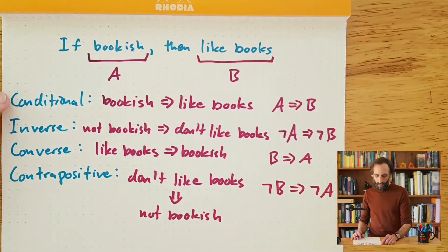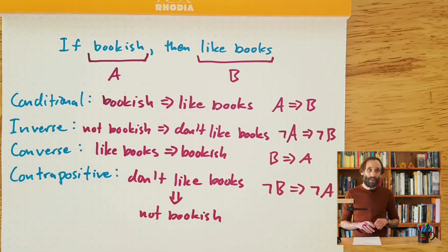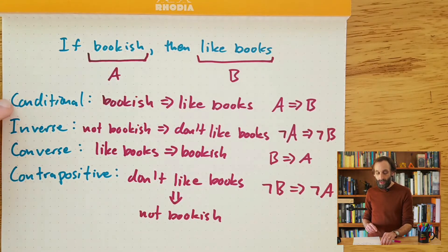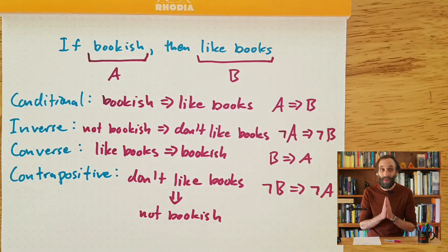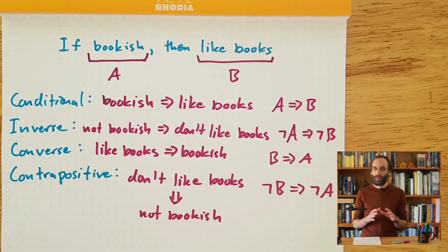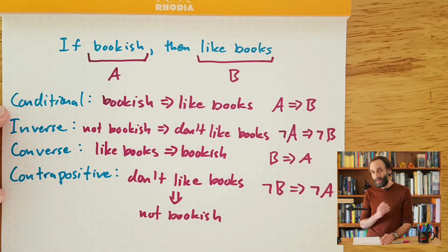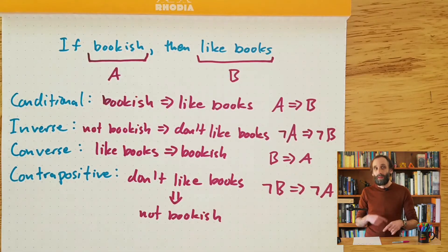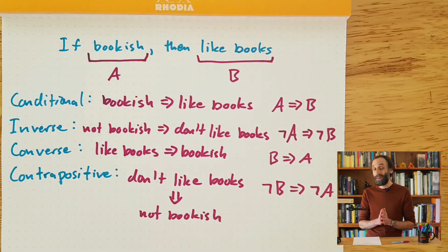So we have our four forms — the original conditional and three other forms. One of these other three forms is equivalent to the original conditional — it has the same truth value. I'd challenge you to try to figure out which one it is. You could come up with different conditionals, play around with them, maybe even pause the video. I'm going to show you one more example before I tell you which one it's equivalent to, but I encourage you to try to figure it out yourself first.